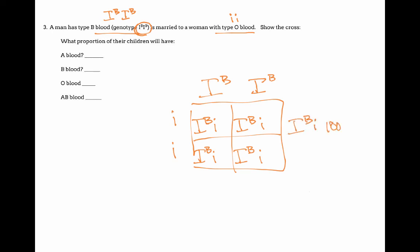So this is going to be 100% I^B i. So that means there's nobody with type A blood, 100% type B blood, 0% O blood, 0% AB blood.